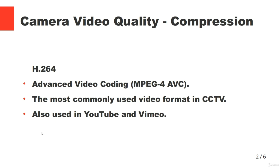If you use H.264 compression with an eight megapixel camera, you will require huge hard drives. But if you go from H.264 to H.265, you will get much better compression, and then going even higher to H.265+, you get huge savings on hard drives. H.264 is called Advanced Video Coding and is the most commonly used format in CCTV, also used by YouTube and Vimeo.